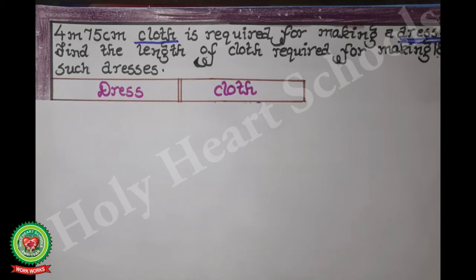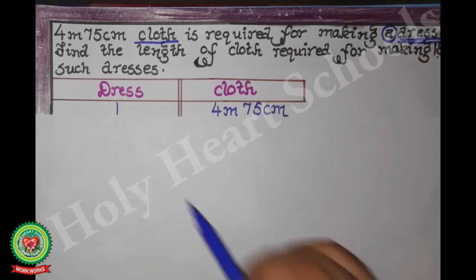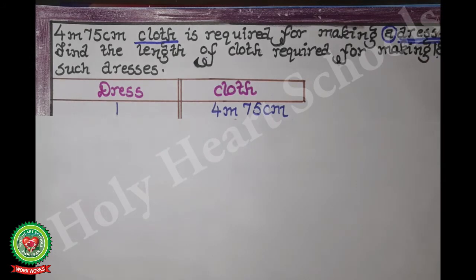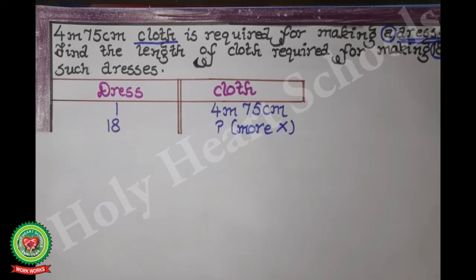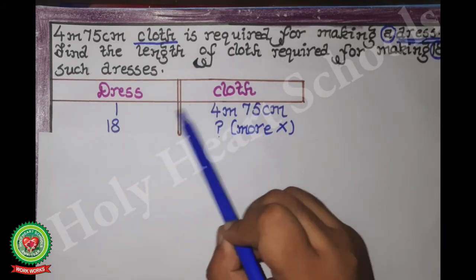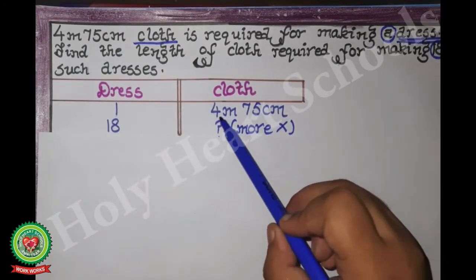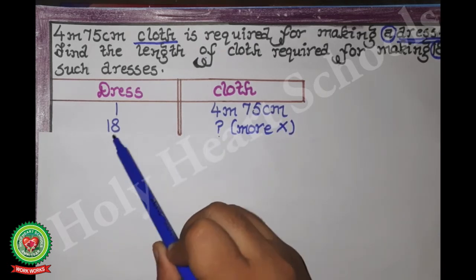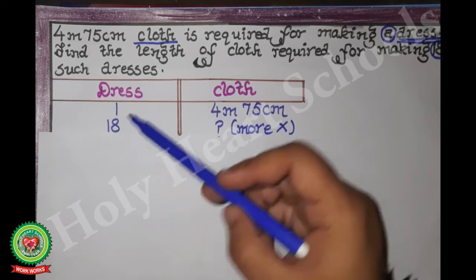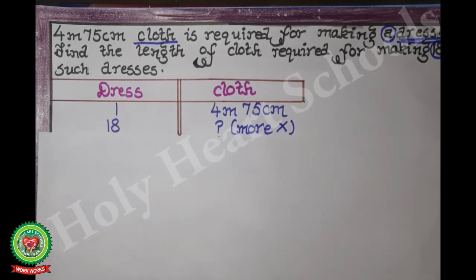Firstly, how many dresses are given? 'A' means one dress, so we will write one. Second time, how many dresses are given? Eighteen, so we will write 18 below one. The length of cloth required for one dress is 4 meters 75 centimeters, so we write 4 m 75 cm. Eighteen is more than one, so we will multiply. First statement with 'if' and second with 'then'.